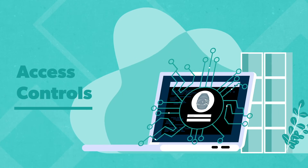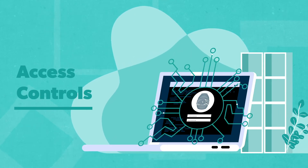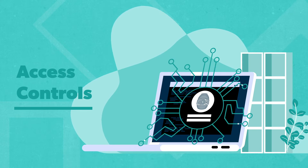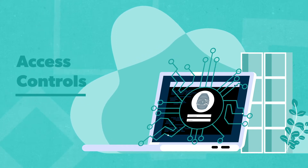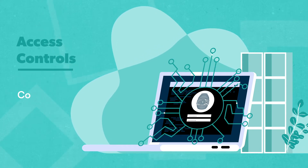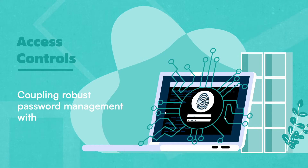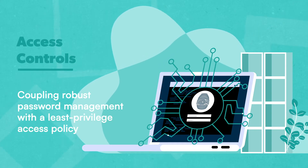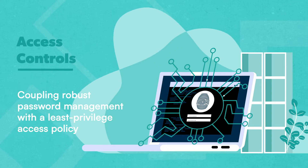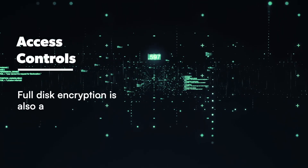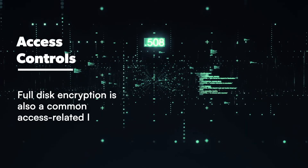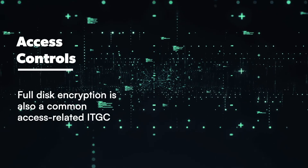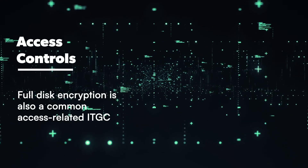Access Controls are another form ITGCs can take. ITGCs should include various methods of preventing unauthorized access and data manipulation. Coupling robust password management with a least-privileged access policy can instantly lower the chances of a cyberattack. Full disk encryption is also a common access-related ITGC because it completely locks devices, even while at rest.